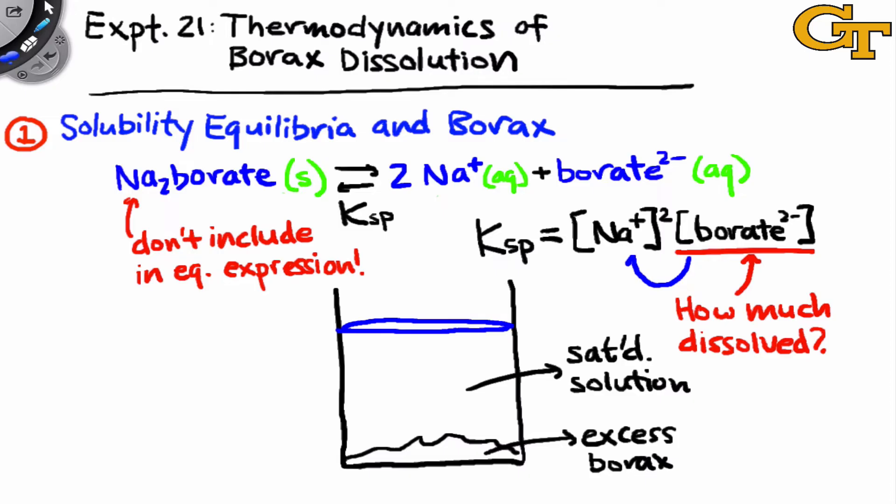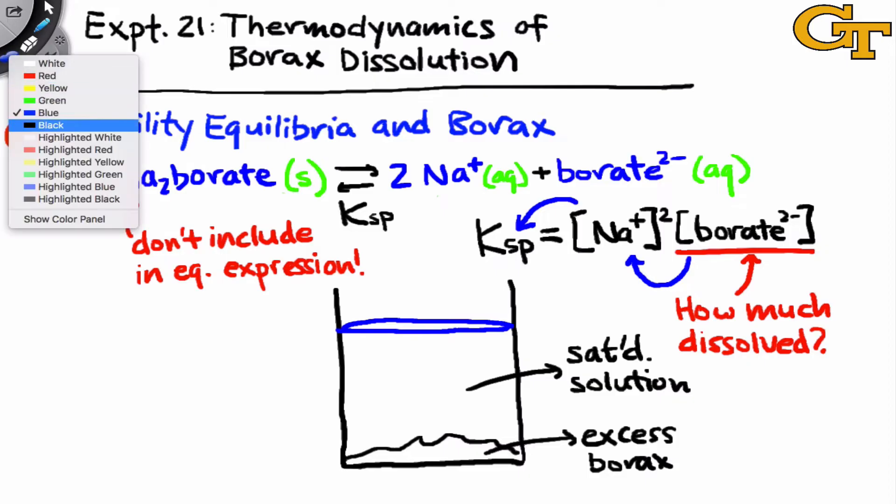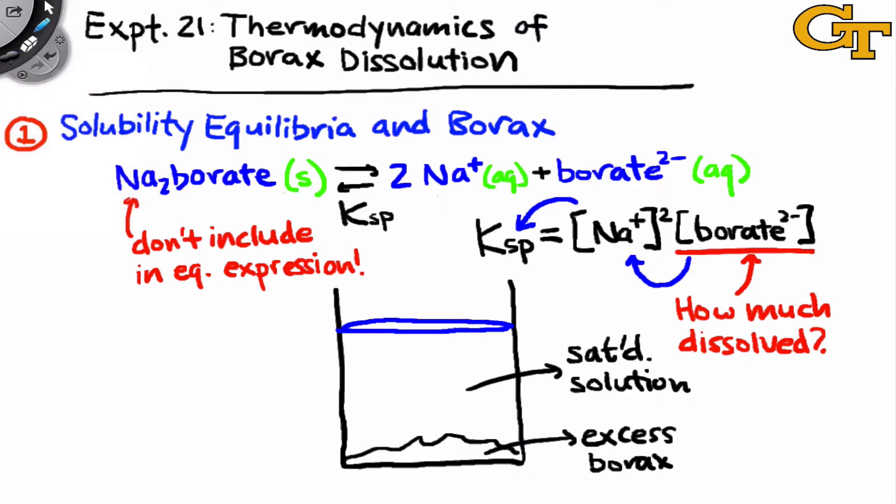With those in hand, we simply square the sodium concentration and multiply by the borate concentration to get back to Ksp. And notice that what we're interested in here are concentrations, molarities, ratios of moles to liters.